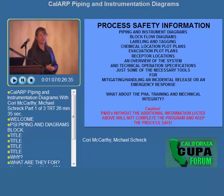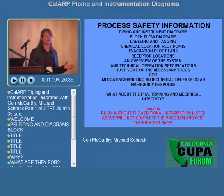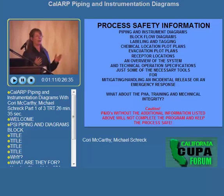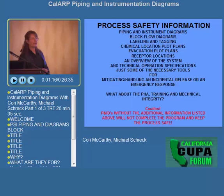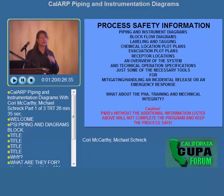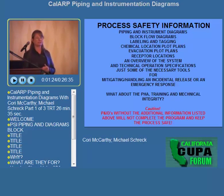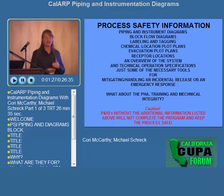Evacuation plot plans are needed for the safety of workers and visitors on site so they know how to get out safely, where to go, and how to be accounted for. Receptor locations — if we have sensitive public receptors, in most jurisdictions this would be handled by the local emergency planning commission or the fire department.